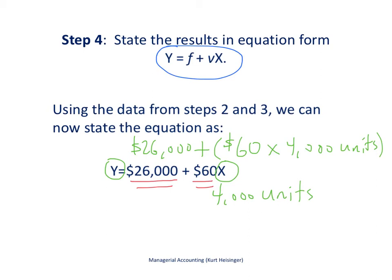Our total variable costs then would be $240,000, that is this right here, $60 per unit times 4,000 units, and we would add to that the $26,000 in fixed costs. And the result would be, the estimate would be $266,000.